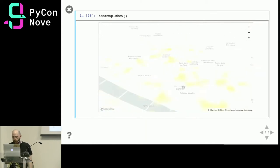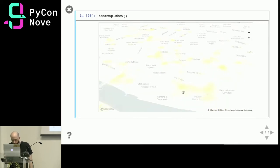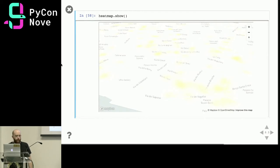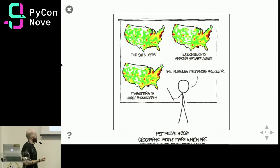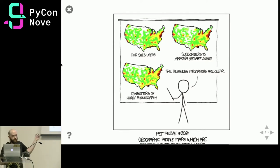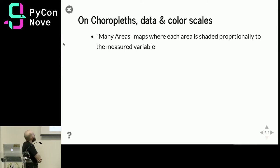There's a problem with heat maps though — most of the time they are quite meaningless because they're basically just population maps. They're nice and easy to make, and they're compelling, but as this comic reminds us, the actual meaning can be misleading. So this visualization alone is not enough — let's move to something more meaningful.